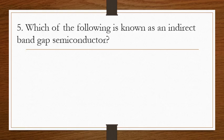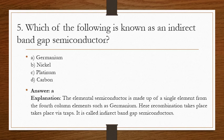Question 5: which of the following is known as an indirect bandgap semiconductor? The answer is A. Elemental semiconductors are made up of a single element of the fourth column, such as germanium, where recombination takes place via traps, and therefore they are called indirect bandgap semiconductors.